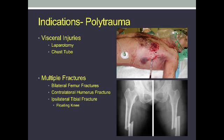Some of the other indications involve patient positioning. Oftentimes in polytrauma patients, lateral positioning is not possible because of visceral injuries or something such as a chest tube on the lateral side. Multiple fractures are also difficult to position and are better treated in the supine position in some cases, because if there are bilateral femoral fractures or ipsilateral tibial fractures, the fractures can be fixed at the same time without repositioning. In the case of a tibial fracture, they can be fixed through the same incision as the femoral shaft fracture.